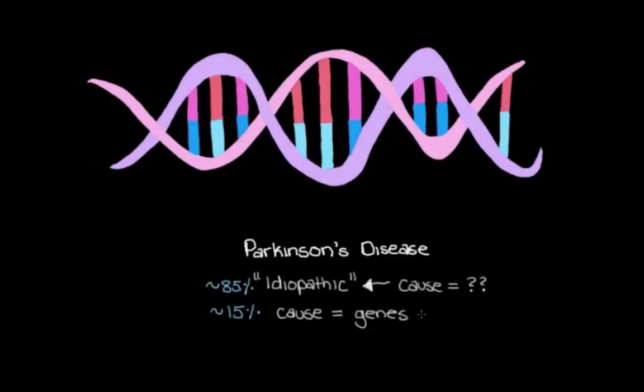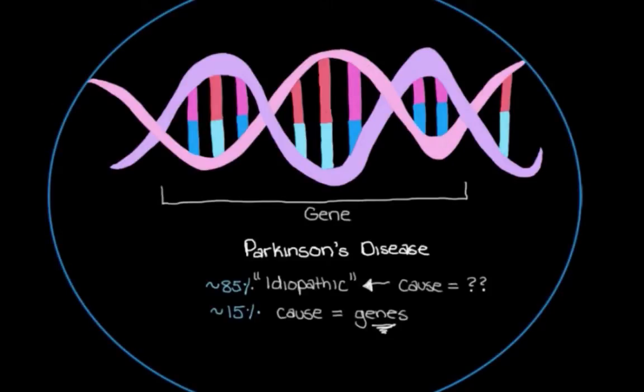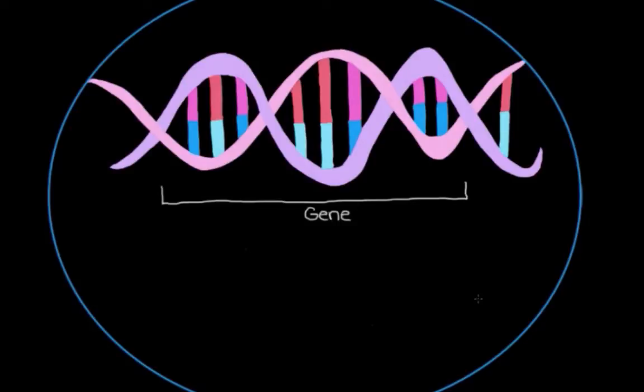So a quick recap on genes. Remember that genes are essentially specific segments of our DNA. You'd find them in almost every cell in your body. They're specific segments of DNA that provide instructions to the cell. And each gene is like a special recipe. Each gene has instructions for how to make different proteins.